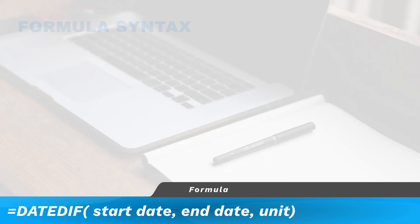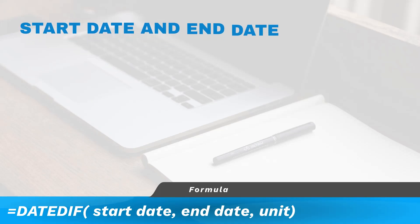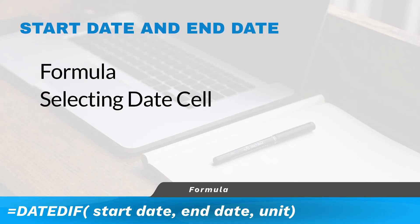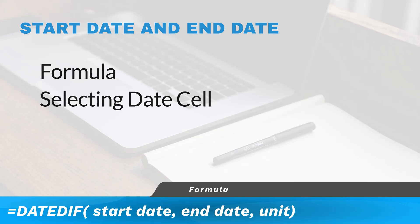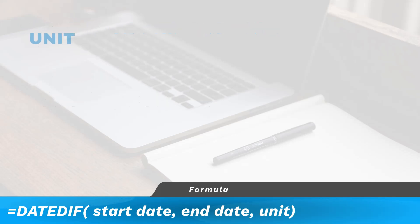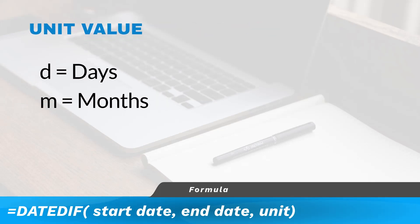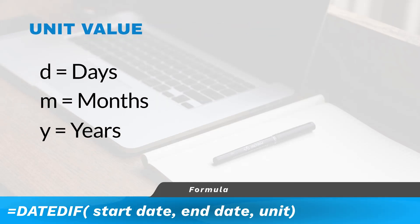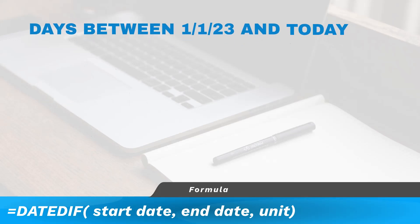The Start Date and End Date can be determined using a formula or by selecting a date cell. The unit returns either the number of days, months, or years. To return the number of days we would use D as the unit, months would be M, and Y for years.